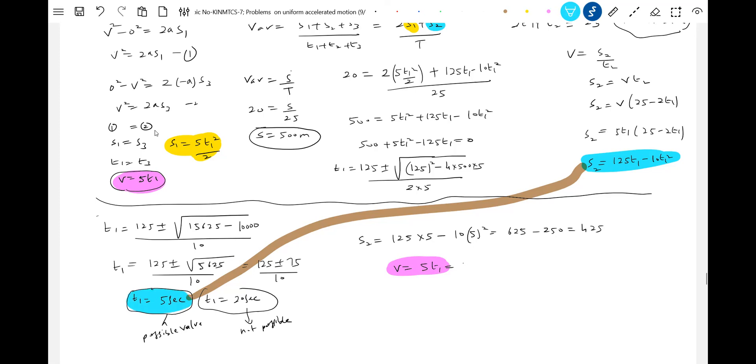Let me highlight. From this: 5 into 5 is 25 meters per second. Then it will move at uniform speed. For what time? T2 equals S2 by V. S2 is 425 by 25.